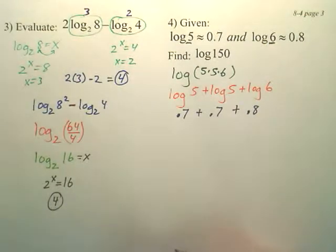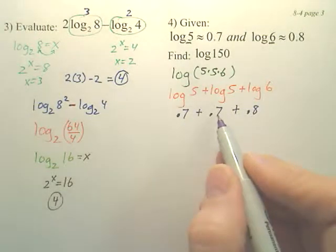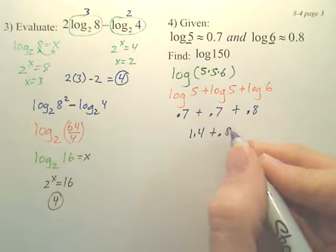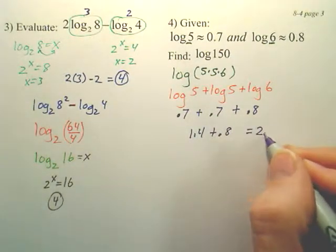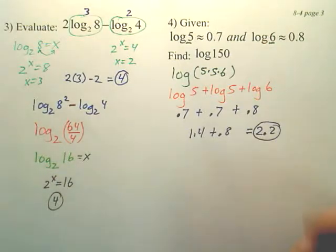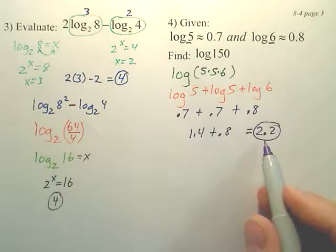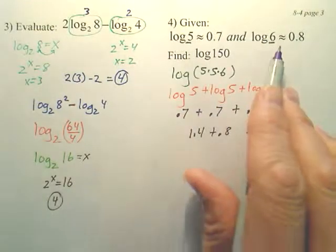Can you add that all up and get your answer? Yeah. 7 plus 7 is 14, so 1.4. 1.4 plus 0.8 is 2.2. So, log 150 is 2.2. As long as you knew these things. You just got to deal with your condensing and expanding and stuff like that.